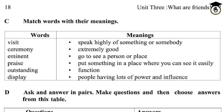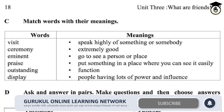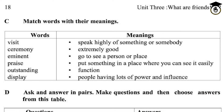First of all, we have to look at the vocabulary. The words are: visit, ceremony, eminent, praise, outstanding, and display. We have to match them with the meanings in the right column. The meanings are: speak highly of something or somebody; extremely good; go to see a person or place; put something in a place where you can see it easily; function; people having lots of power and influence.